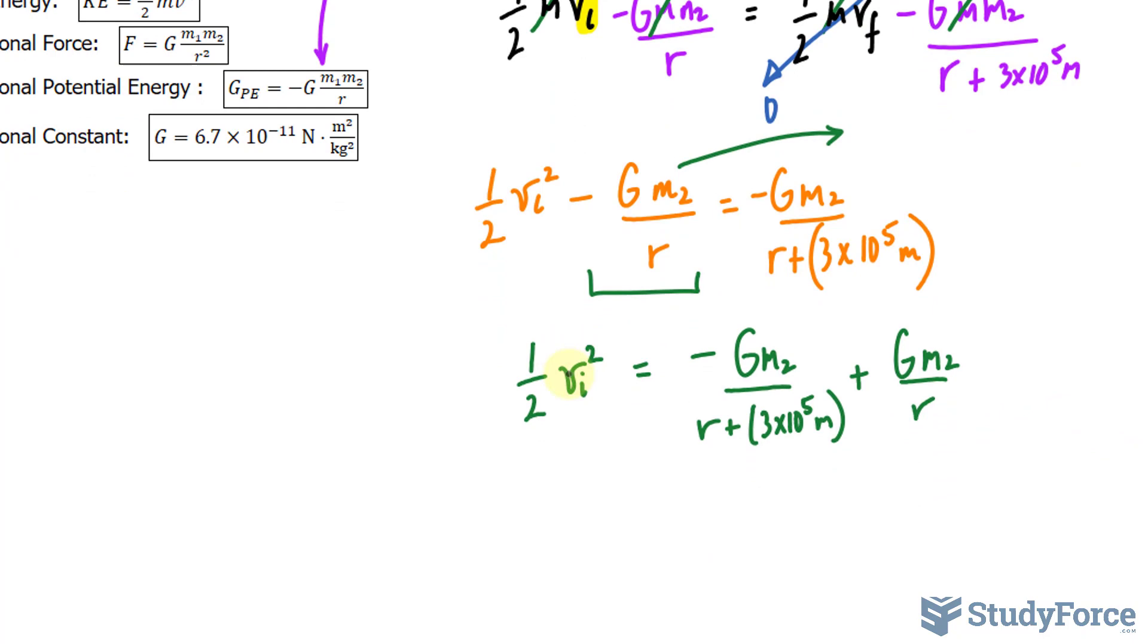To isolate for v, I multiply both sides by 2. And that cancels out the half here, leaving us with v sub i to the power of 2. And to remove this exponent of 2, I will square root both sides.